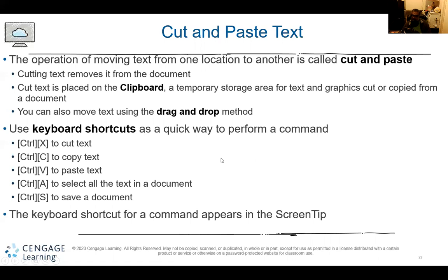Some quick keyboard shortcuts: Control X is cut, Control C is copy, Control V is paste, Control A selects all text in the document, and Control S is save. These are probably the ones you want to commit to memory because it makes things a lot quicker. Cutting text removes it from the document and places it on a clipboard — temporary storage for text and graphics cut or copied from the document. You can also move text using the drag-and-drop method. Keyboard shortcut commands appear in screen tips as a reminder, but you should commit them to memory.